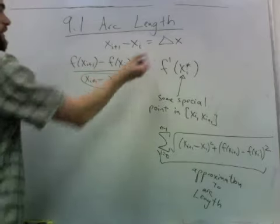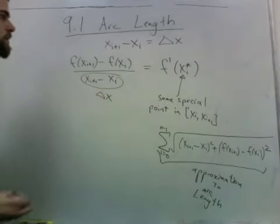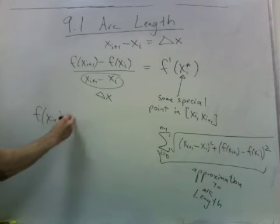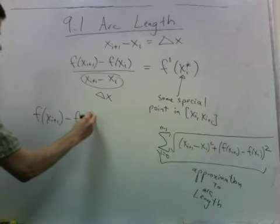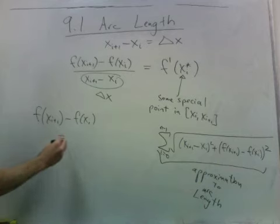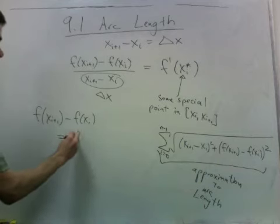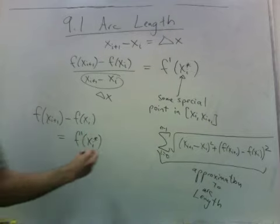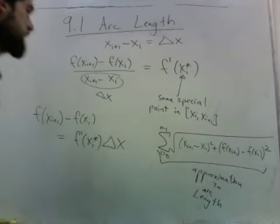And remember, this is just delta x. f xi plus 1 minus f xi is equal to f prime at xi star times delta x. Now let's use this to rewrite our approximation.